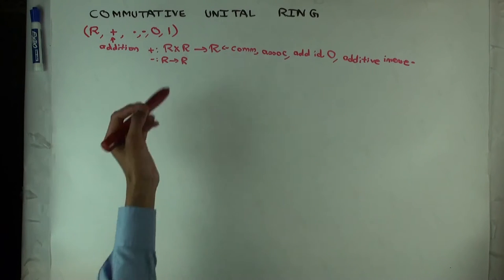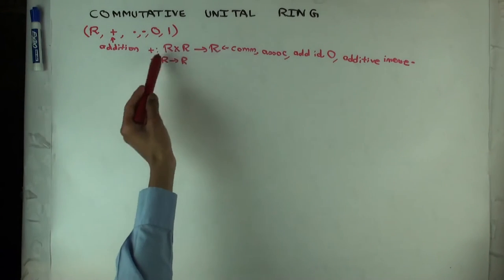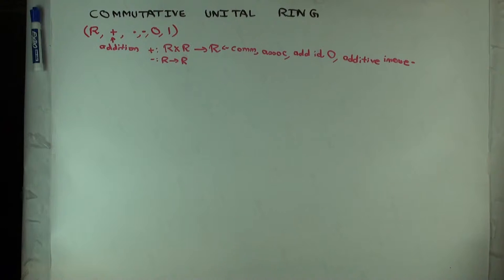Well, closure is sort of captured in the notation itself. The way I've written, because it's a binary operation from R cross R to R means it's closed. That's a function. It's a function from R cross R to R means it's closed, so I'm not listing closures separately.